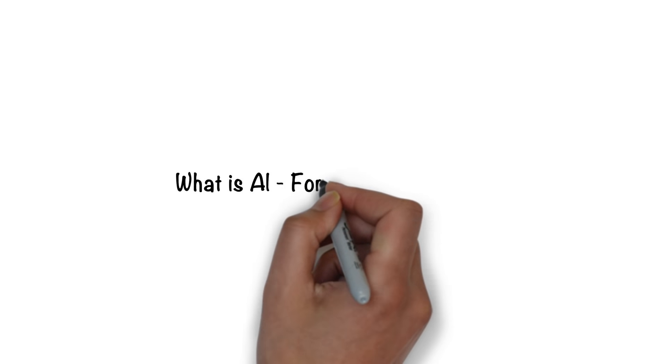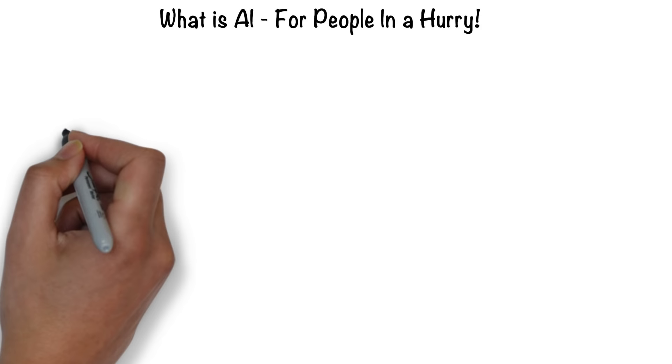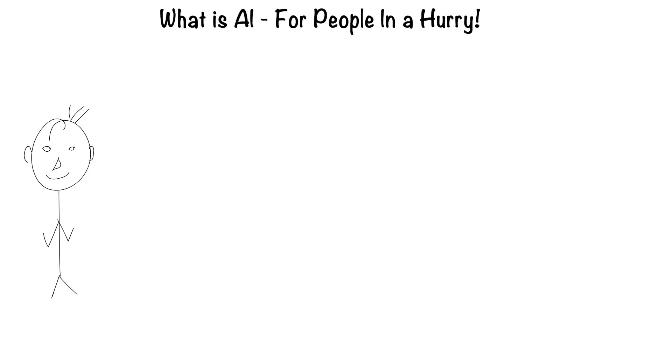Artificial intelligence for people in a hurry. The easiest way to think about artificial intelligence is in the context of a human. After all, humans are the most intelligent creatures we know of.